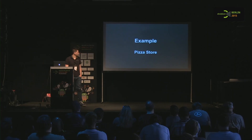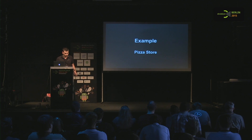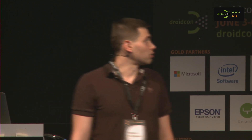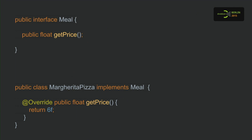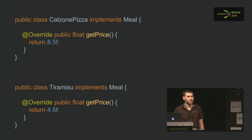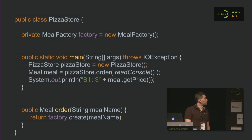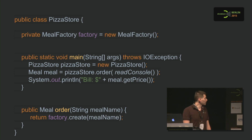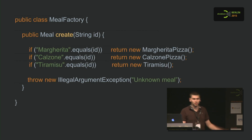Now let's get started writing our own annotation processor. We'll cover some edge cases and problems you'll face. It's a Java sample — not Android-based — but you should get the point of what it takes. Basically, it's a pizza store. We have an interface Meal, and our pizza store sells Pizza Margherita, which implements Meal, Calzone, and a dessert Tiramisu. It's a plain old Java application with a main method that reads console input. It's basically a factory pattern, and instead of writing that by hand, we want to generate that code.